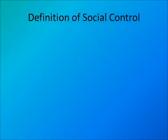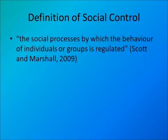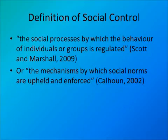The definition of social control is the social processes by which the behavior of individuals or groups is regulated, as stated by Scott and Marshall in A Dictionary of Sociology. It is also the mechanisms by which social norms are upheld and enforced, as stated by Calhoun in A Dictionary of the Social Sciences.